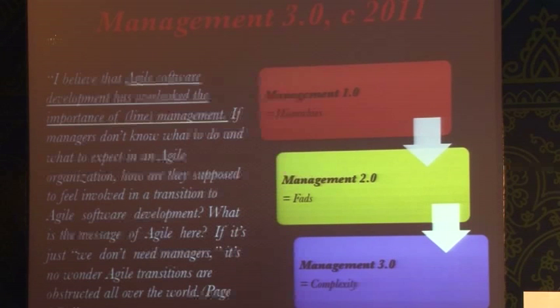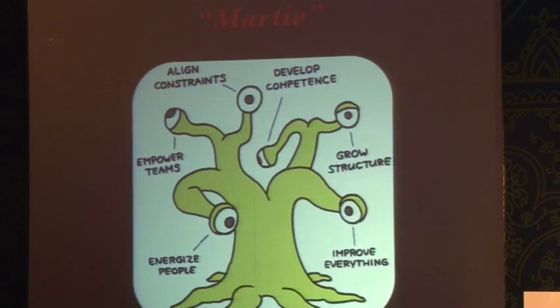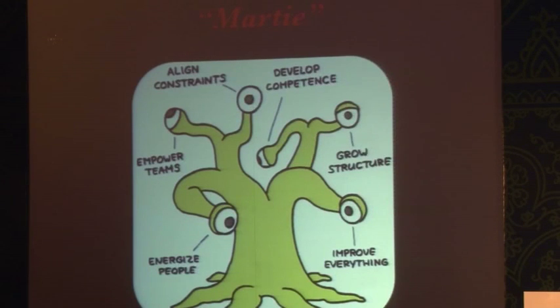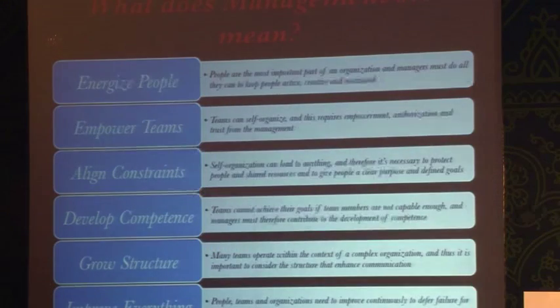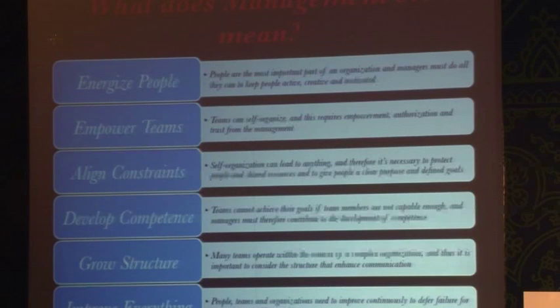Most of those things were fads and they went away. Jurgen talks about Management 3.0 as something that is really all about handling complexity — he brings the whole system of complexity theory into it. He created a funny character called Marty and says that Marty is really Management 3.0, which encapsulates six activities that managers must do. What it essentially does is it does not do away with the notion of a manager — it doesn't create a leaderless or managerless hierarchy.